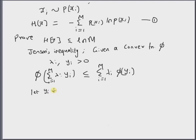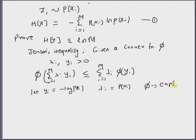Now let the variable yi be equal to minus log of p of xi. Note that this is always a positive value, since log of a probability is always negative, and negative times negative is positive. So yi is a positive value. Let the weights lambda i be equal to the probability itself, p of xi, and let phi be the exponential function, which is a convex function.